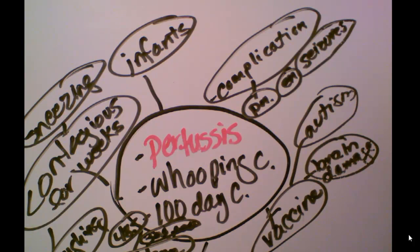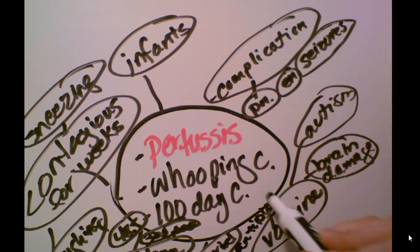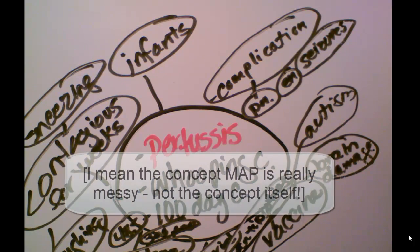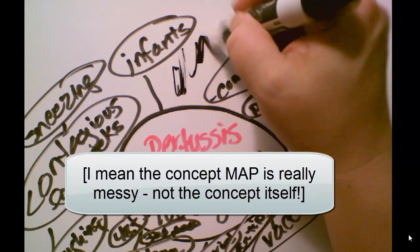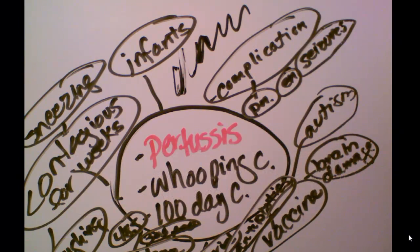I might also want to talk about the fact that it's a bacterial infection, which means antibiotics can be used once you get it — but you'll still be infectious for quite a while. I know this concept map is really messy, and part of the reason is I'm using a really wide tip pen. This should give you a basic idea of what a concept map entails.